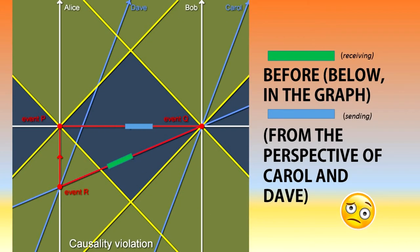The problem here is that, as can be seen, Dave will receive the signal from Carol before it is even transmitted by Alice. The signal has therefore traveled back in time.